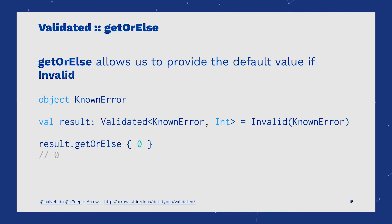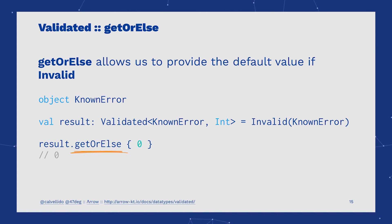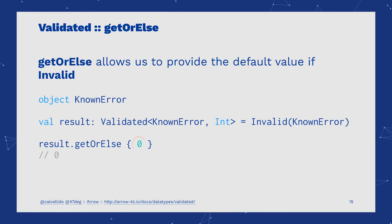A concretion of the previous fold is getOrElse. In getOrElse, we are simply providing the function that addresses the Invalid case. Here, we are saying that if it's a known error, we should return zero instead.